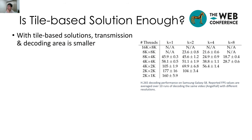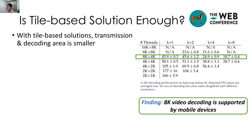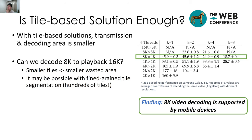Tile-based solution is quite popular for panoramic video streaming. Is it possible to achieve 16K video streaming with tile-based solutions? First, transmission and decoding area is smaller using this solution, and we see that 8K video decoding is supported by mobile devices. So can we decode 8K to playback 16K? With tile-based solution, smaller tiles lead to smaller wasted area, so it may be possible with fine-grained tile segmentation.